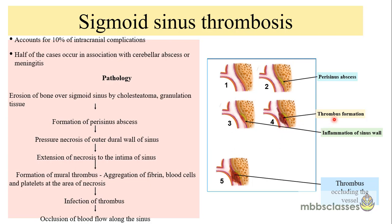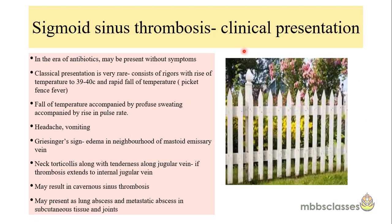In some cases there can be only thrombosis; in others this thrombosis may be secondarily infected. Where infection of the thrombus occurs, septic emboli can be disseminated to other parts of the body. The thrombosis may be localized only in the sigmoid sinus, or it can spread anterograde or retrograde — either to the internal jugular vein or to involve the transverse sinus, and sometimes it may extend up to the torcular.